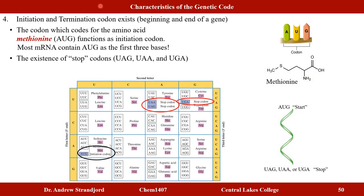Within the messenger RNA, the AUG codon functions as the initiation codon — it codes for methionine and marks the beginning of the gene and the protein chain. Three stop codons mark the end of the gene and signal that no more amino acids should be added to the growing polypeptide chain.